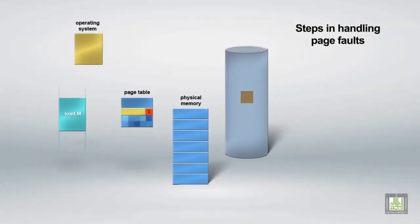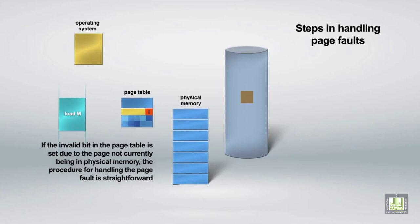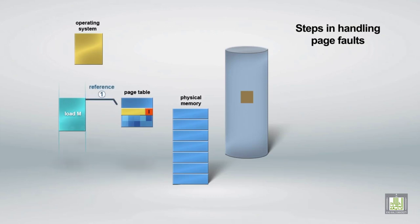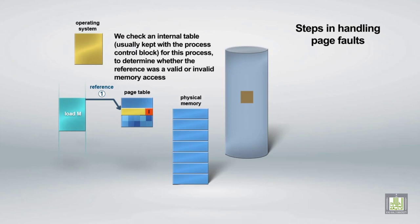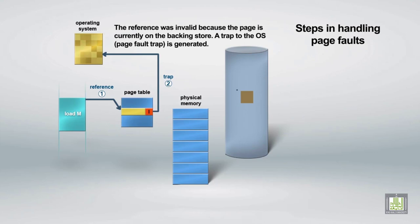If the invalid bit in the page table is set due to the page not currently being in physical memory, the procedure for handling the page fault is straightforward. We check an internal table, usually kept with the process control block, for this process to determine whether the reference was a valid or invalid memory access. The reference was invalid because the page is currently on the backing store, so a trap to the OS is generated.